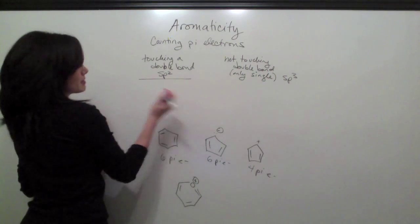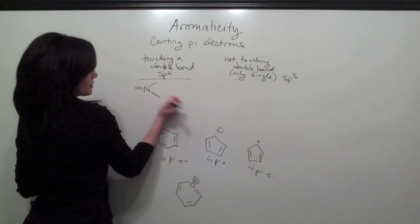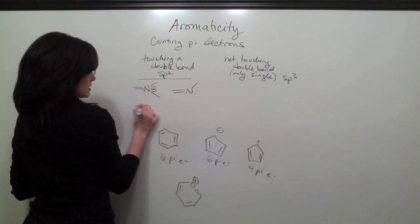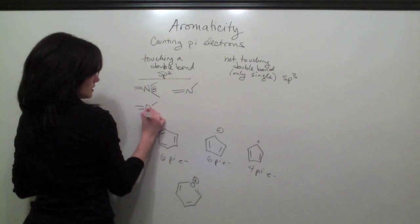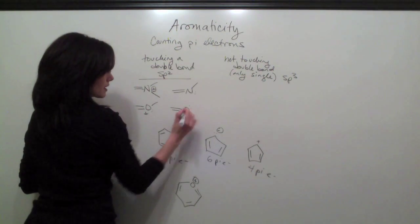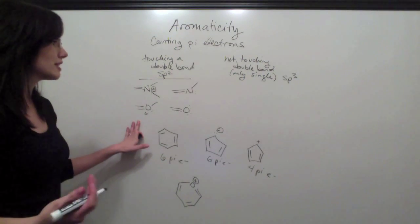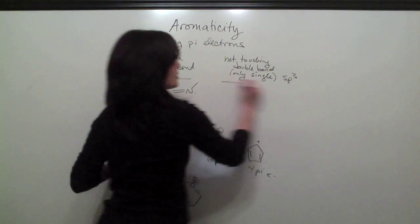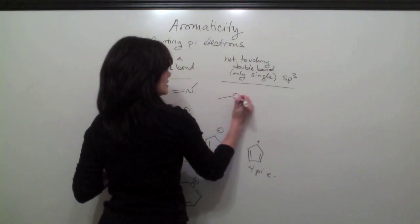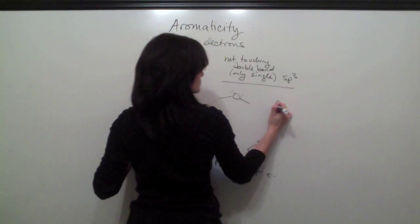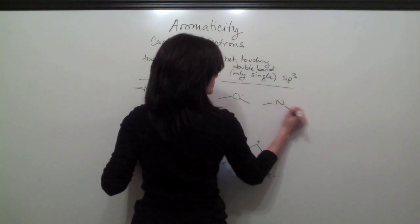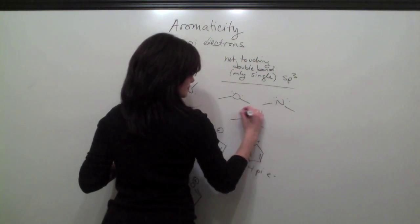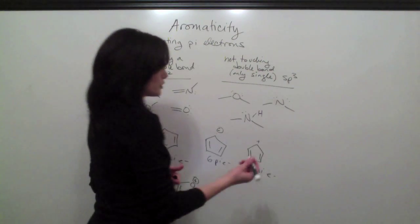So if we're looking at some examples of nitrogens, oxygens, if they're touching a double bond, they're going to be sp2, and they're going to count as one pi electron. If they're not touching a double bond, they're going to be sp3. And they're going to count as two pi electrons.